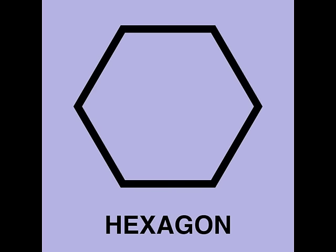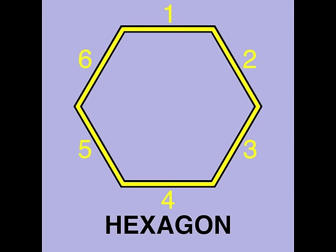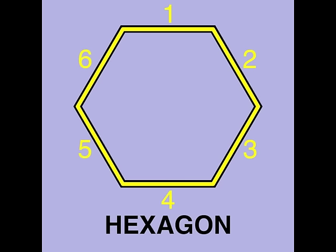A hexagon is a shape that has six sides. It is a polygon made up of six connecting lines.